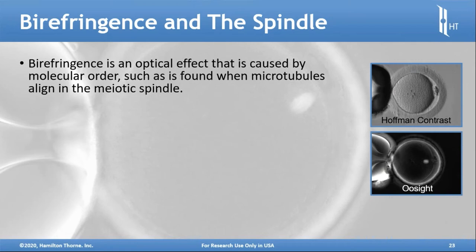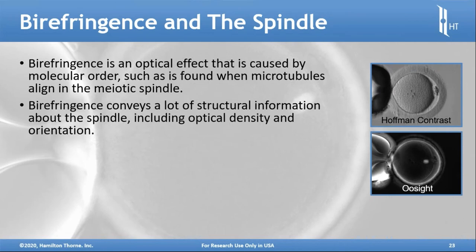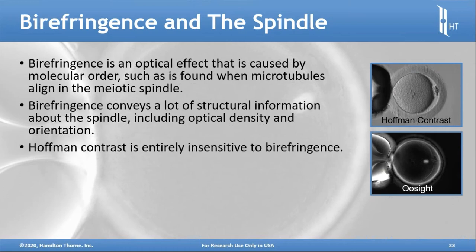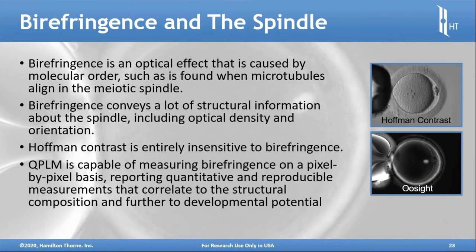In an oocyte, the microtubules in the spindle have very robust molecular order and convey a lot of structural information. The birefringence of those molecules can be captured in microscopy and give quantifiable information about optical density and orientation — meaning which way the light gets bent or refracted as it passes through these structures. Hoffman systems are insensitive to birefringence; they give a wonderful image but nothing quantifiable, leaving only gross morphological human-eye studies.